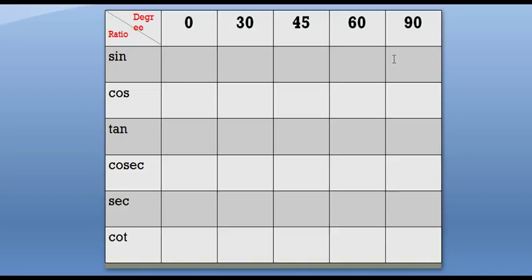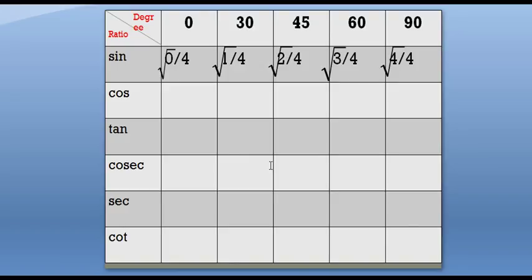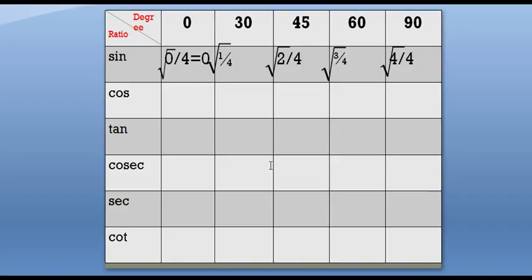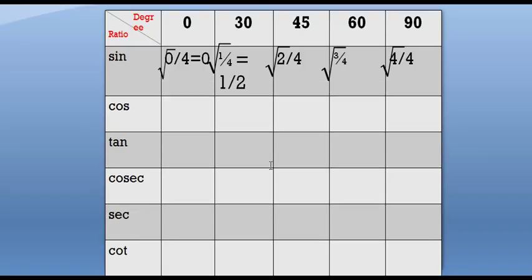For sine, we will start writing from 0, 1, 2, 3, 4. Now we will divide everyone by 4. After that we will put a square root on everyone. So the value starting from 0: 0 by 4 is equal to 0; square root of 1 by 4 is 1 by 2; and square root of 2 by 4 — we simplify 2 by 4 to 1 by 2 — so it will be 1 by root 2.